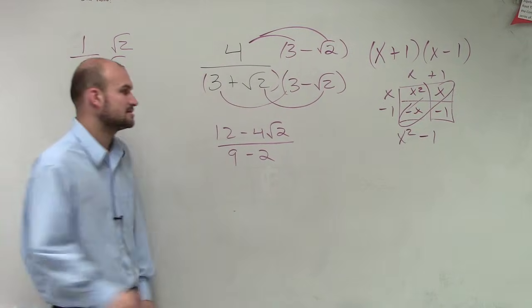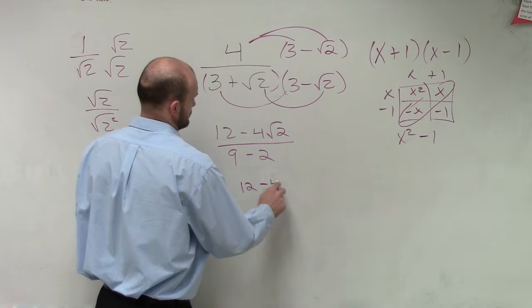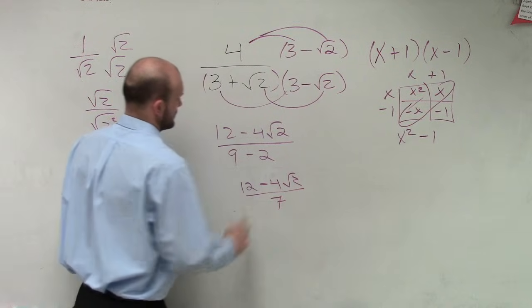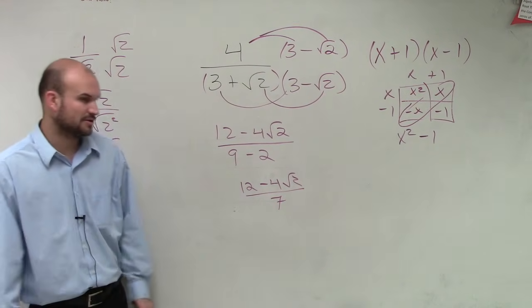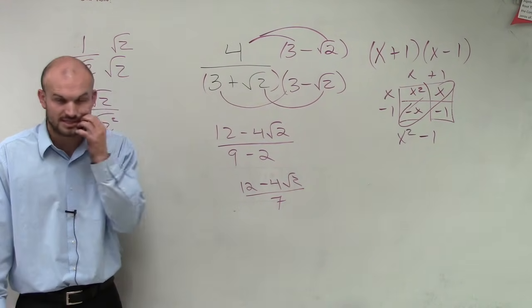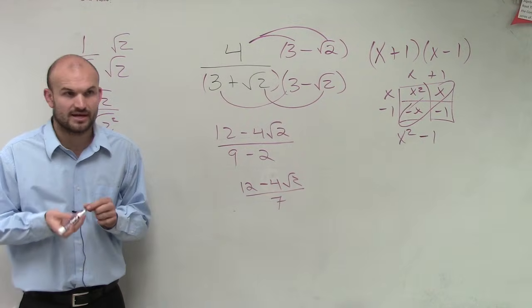9 minus 2 is 7. Now we see, can we divide the 7 into both those terms? No, so we're just going to leave it as is. Okay? That is it.